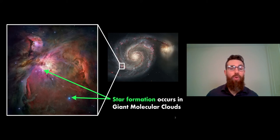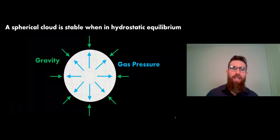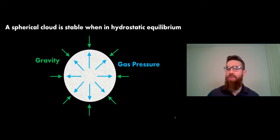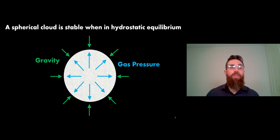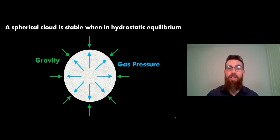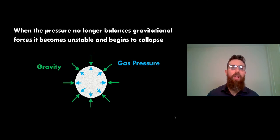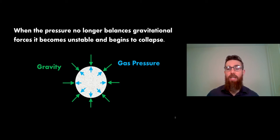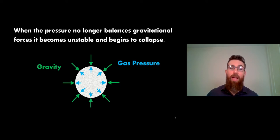We're going to assume that is our starting point. For simplicity we assume the cloud is spherical, though in the real world it's not, but it makes the mathematics much easier. A spherical cloud is stable when it's in hydrostatic equilibrium, meaning gravitational forces are balanced by outward gas pressure - it's not collapsing and not expanding. However, at some point one force may overcome the other, and in the case of a collapsing cloud the gravitational force overcomes the gas pressure, leading to collapse.